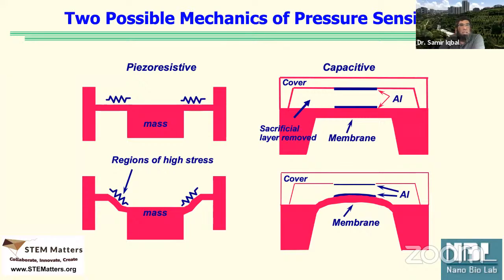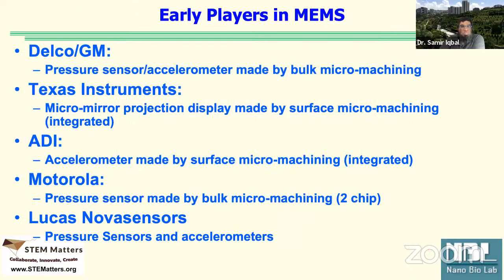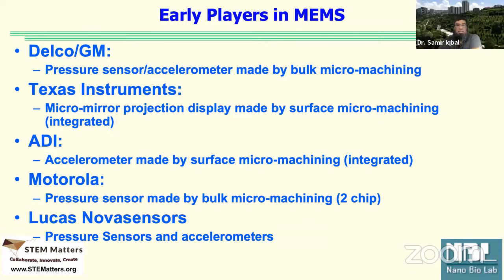MEMS has many companies producing products. Examples include Texas Instruments and Delco — light projection used in projectors, accelerometers, and micro-machined gyros which can measure north and track how things are moving. Integrated or single-chip means everything is made in one chip, while two-chip means two parts on separate chips that are bonded together.